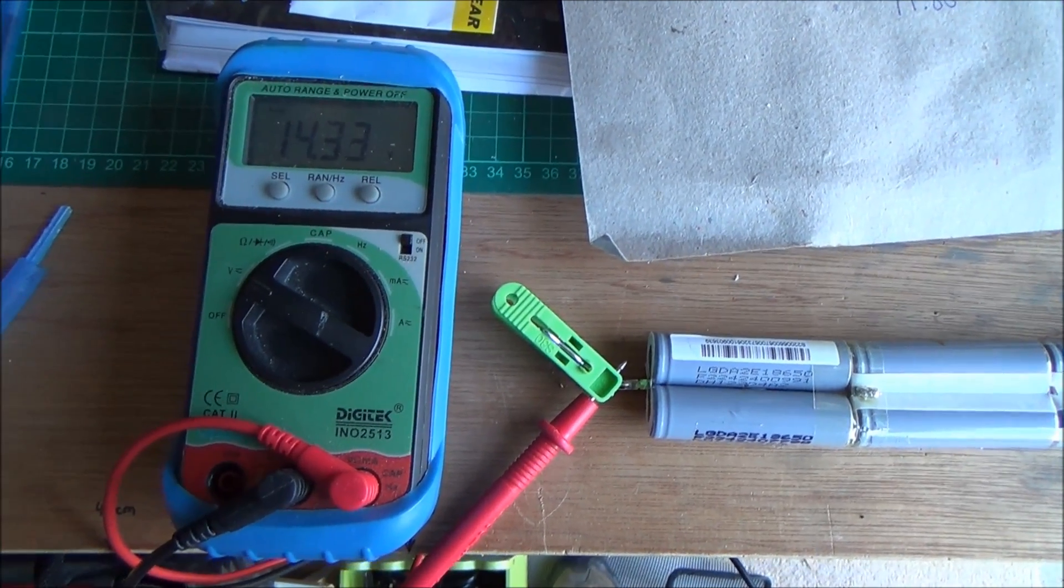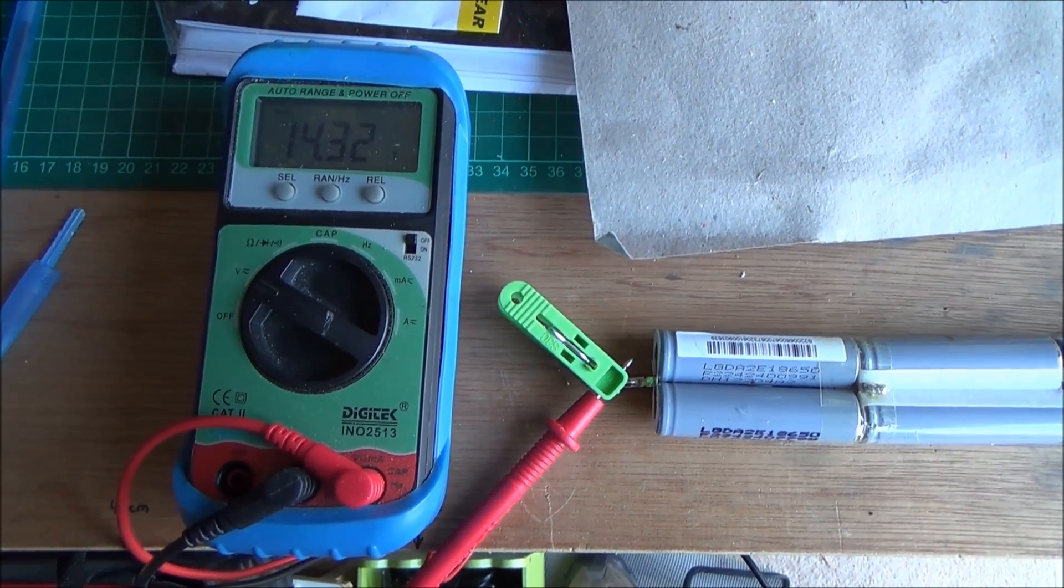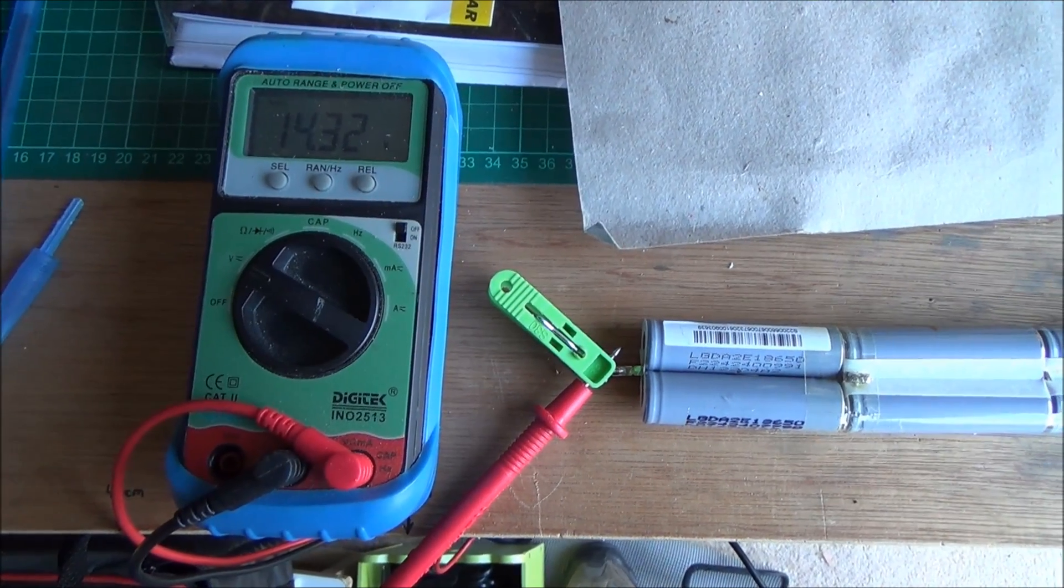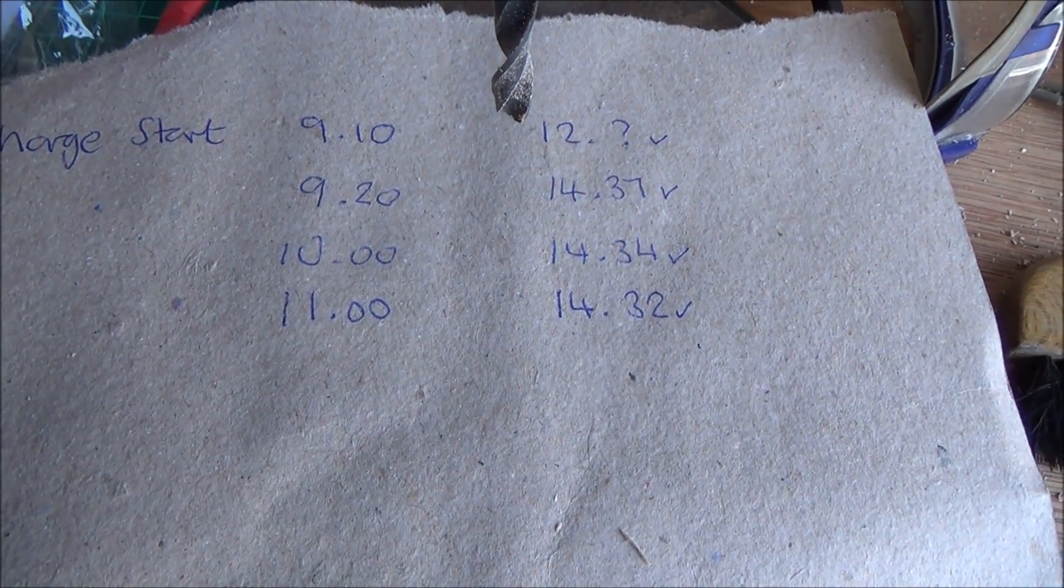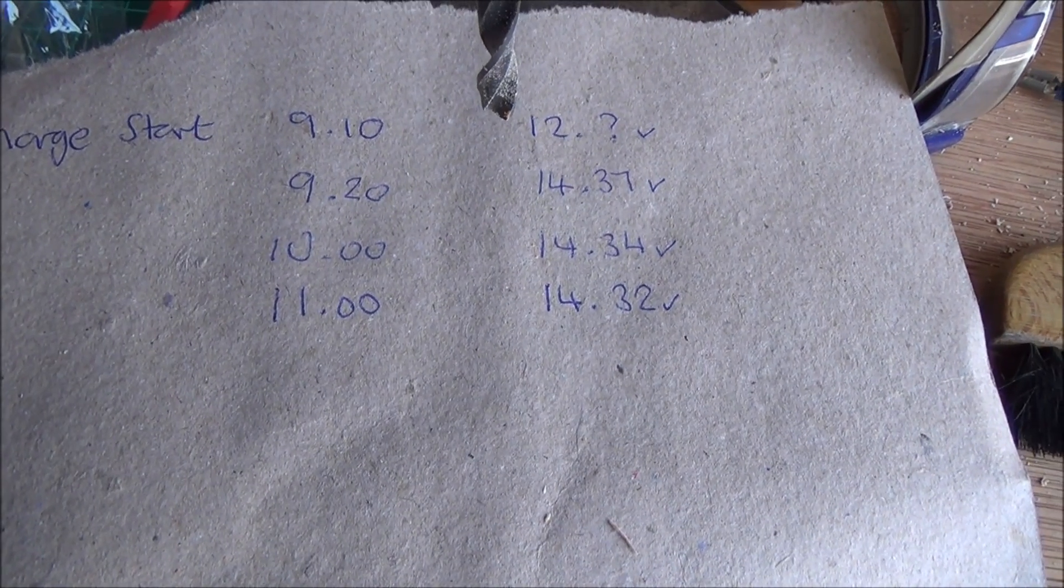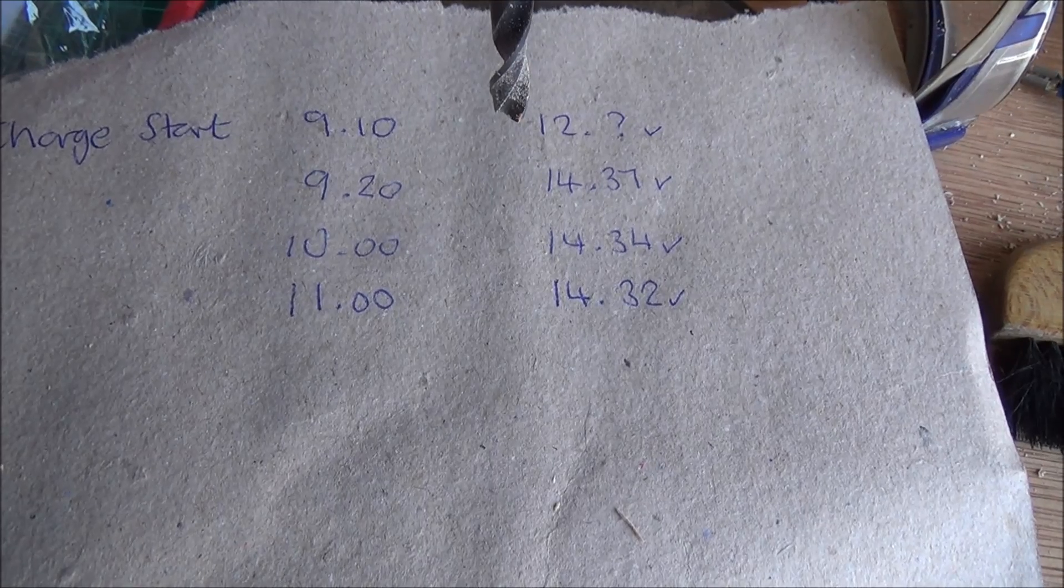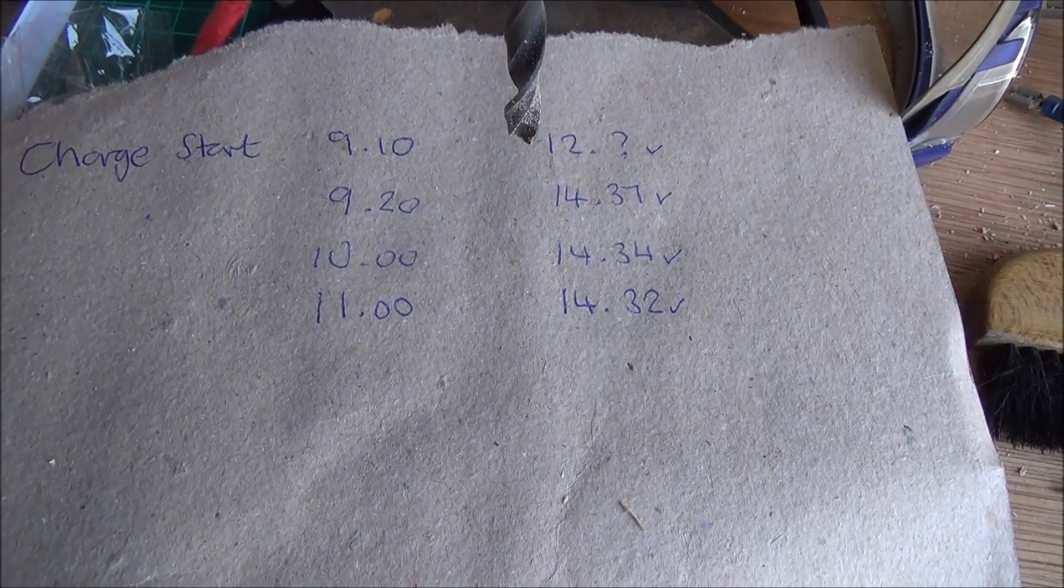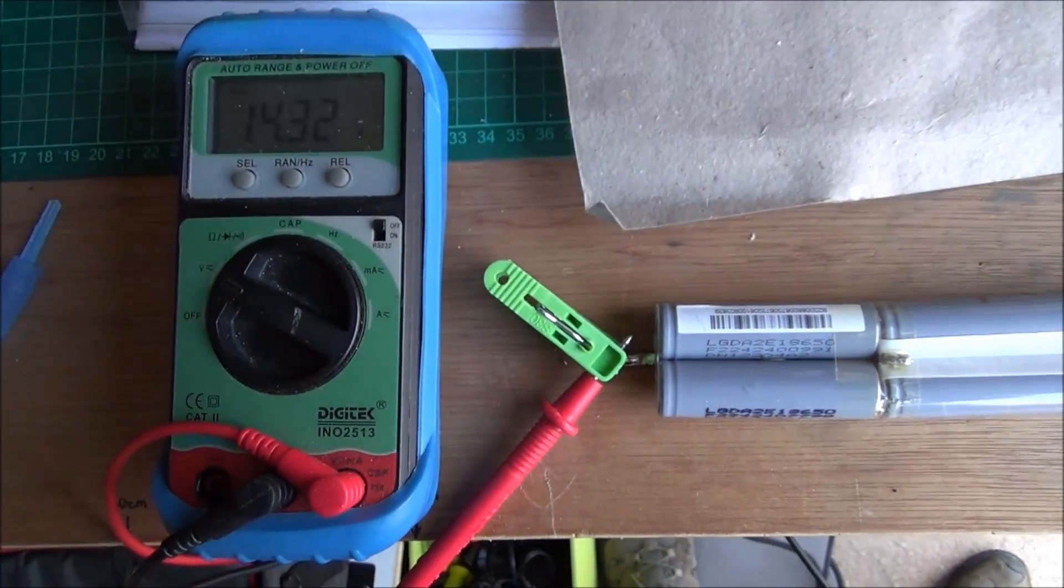Battery update time. It's now 11 o'clock. I've left it an hour now in between. And we're down to 14.32 volts now. So it's dropped 0.2 volts in an hour. So that's not too bad. Right, keep checking.